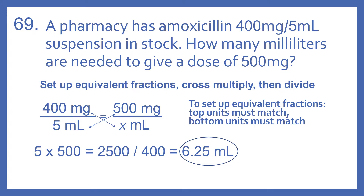So our suspension in stock is 400 mg per 5 ml, and we'll set that equal to 500 mg over x ml. 500 mg is the dose that we're wanting to know how many milliliters it would take.